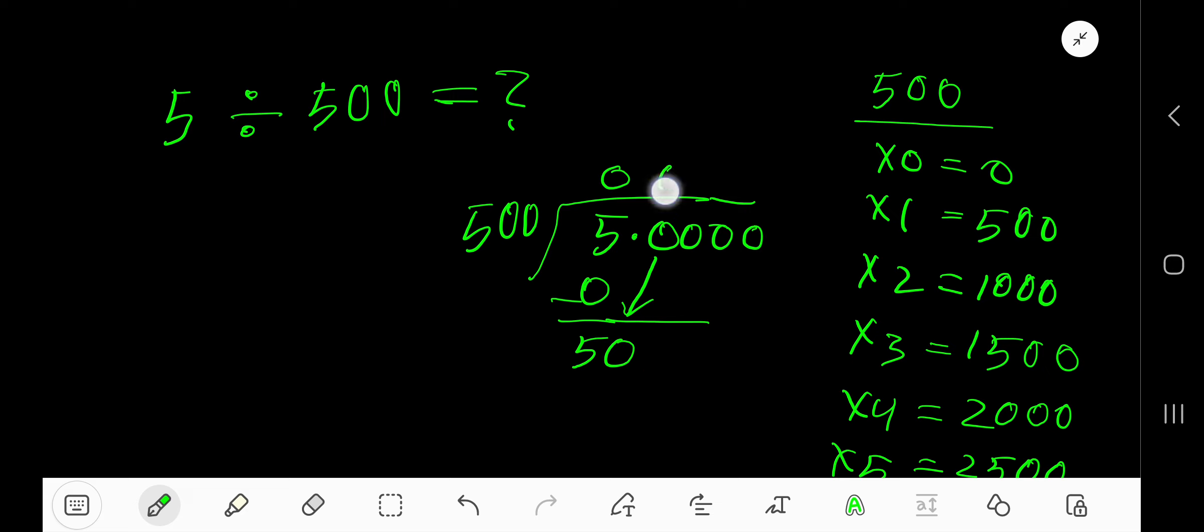500 goes into 50 zero times as 50 is less than 500. Put zero after the decimal. The decimal must come to the quotient directly. So 0 times 500 is 0. Subtract, you are getting 50. Bring down the next zero.